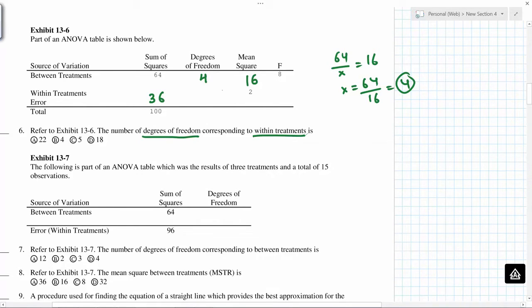And then 36 divided by this degrees of freedom is 2, so this must be 18, and total degrees of freedom is 22. Within treatment degrees of freedom is 18.